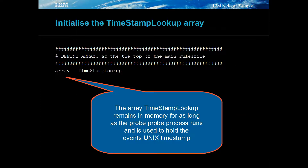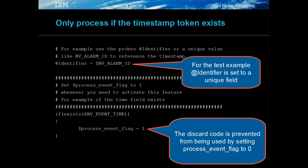The array timestamp lookup holds the event's UNIX timestamp. For the example, the at identifier uses NV_alarm_ID, which defines the event uniquely. When the event time token exists, then use the discard rules files code.